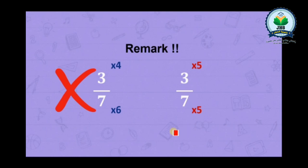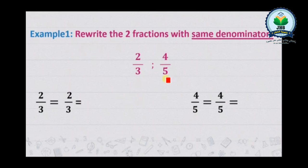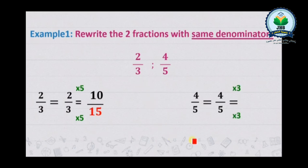We should multiply the fraction by the same number. Example one: rewrite the two fractions with the same denominator. Here we have two over three and here we have four over five. We multiply the first fraction two over three by the denominator of the second fraction, five — so we multiply two over three by five and obtain ten over fifteen. Then we multiply the second fraction four over five by the denominator of the first fraction, three — and obtain twelve over fifteen. We obtain the same denominator: fifteen.